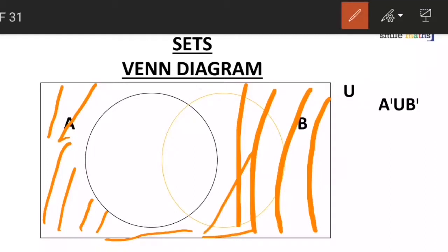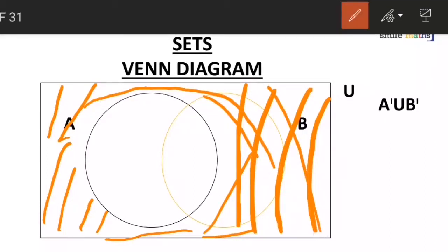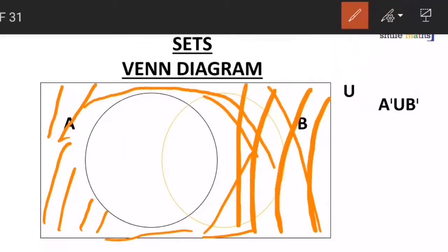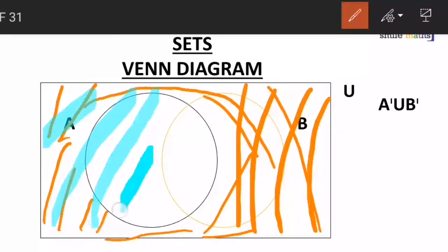That is A complement — outside the black circle. Then we do B complement. So for B complement, we are going to shade the space which is outside the yellow circle. So this side and this side are outside the yellow circle.